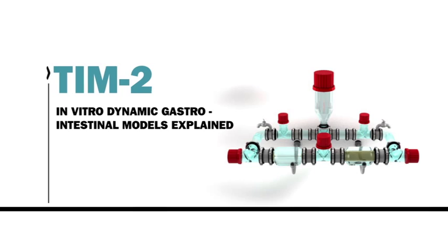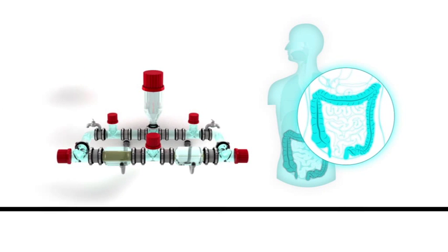The TIM2 represents the large intestine or the colon. This part of the intestine contains a high density of many bacterial species, the microbiota. These bacteria play a crucial role in the further digestion of the undigested materials from the small intestine. Here, probiotics play an important role to keep a healthy balance in the large intestine.